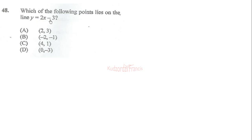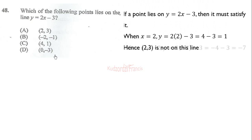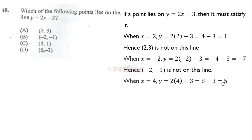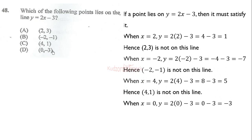Item 48 asks which point lies on the line y = 2x − 3. If a point lies on the line, it must satisfy the equation. Substituting x = 2 gives 1 — not matching; x = −2 gives −7 — not matching; x = 4 gives 5 — not matching; x = 0 gives −3, which matches (0, −3). So (0, −3) is the correct answer.